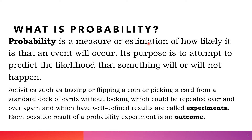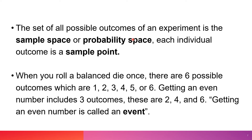Now, what is probability? Probability is a measure or estimation of how likely it is that an event will occur. Its purpose is to attempt to predict the likelihood that something will or will not happen. Activities such as tossing or flipping a coin or picking a card from a standard deck without looking, which could be repeated over and over again and have well-defined results, are called experiments. The possible result of a probability experiment is called an outcome. The set of all possible outcomes of an experiment is the sample space or probability space.